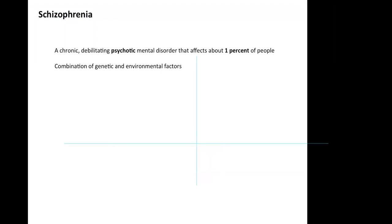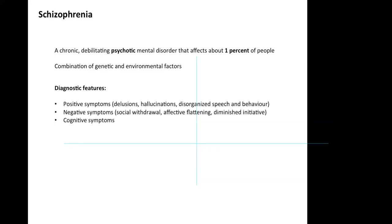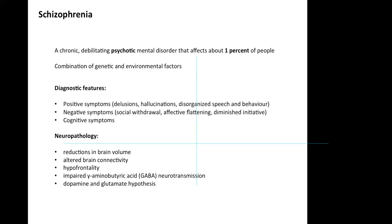Schizophrenia is a chronic psychotic mental disorder that affects about 1% of people and is associated with substantial morbidity and mortality. A combination of genetic and environmental factors plays a key role in the development of this disorder, and it is characterized by several symptoms including positive symptoms such as delusions or hallucinations, negative symptoms such as social withdrawal, and cognitive symptoms.